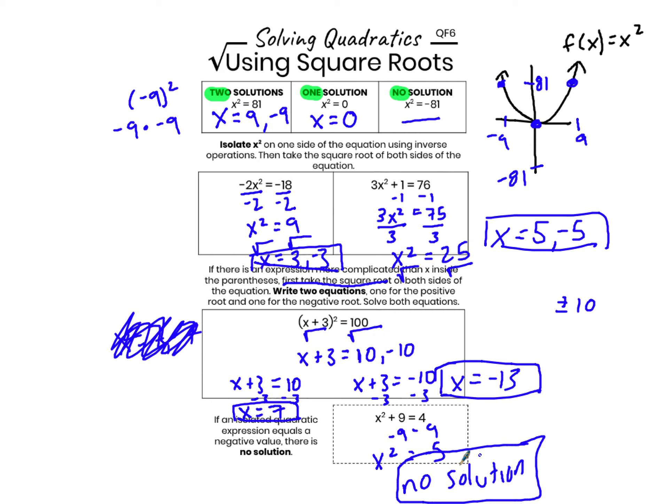I don't try to take the square root of both sides of the equation. There is no value of x that will make this equation true. Nothing times itself equals negative 5. So when I isolate x squared and I get a negative, I say no solution.